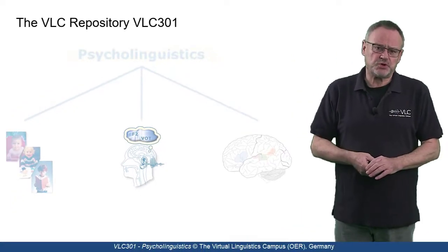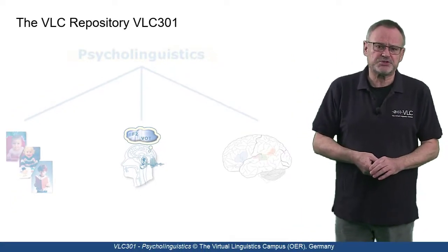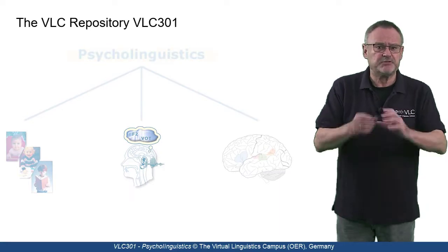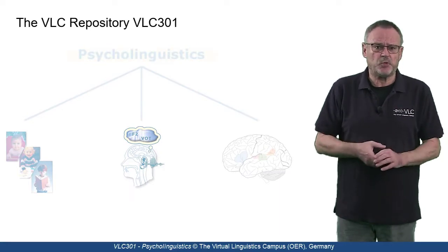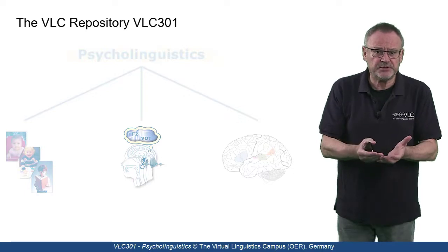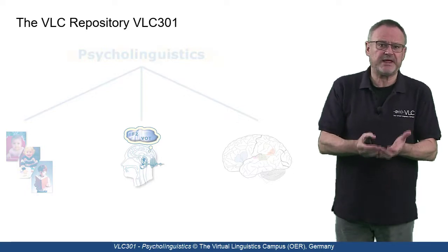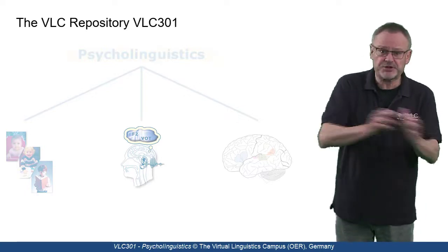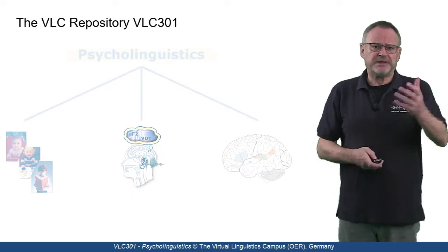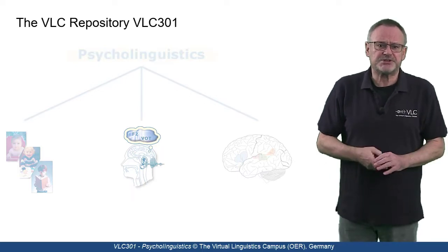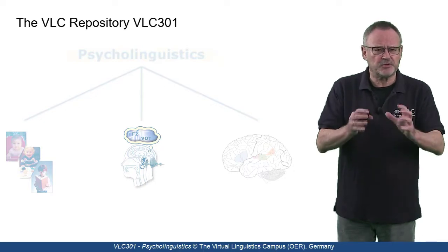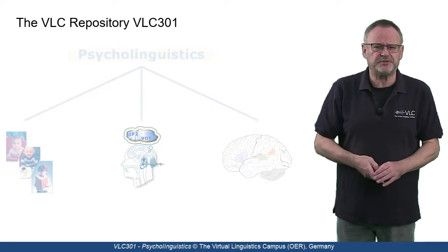Welcome to one of the most complex offers on the Virtual Linguistics Campus — the repository VLC 301 Psycholinguistics, a collection of e-learning units about language processing from adult to child, from mind to brain. To make the content as accessible as possible, VLC 301 is full of interactive multimedia.